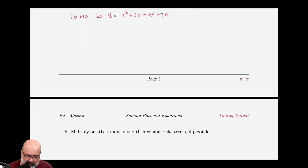So we've done that. Now the next thing to do is to multiply out products and then combine like terms. So we've already multiplied or FOILed things out. We've distributed the 2 and the negative 2. So at this stage, we can combine like terms. So 2x will cancel with the negative 2x. The 10 minus the 8 would give us a 2. And then for the right-hand side, the 5x plus the 4x would give us a 9x. So we copy down the x squared plus the 9x plus the 20.